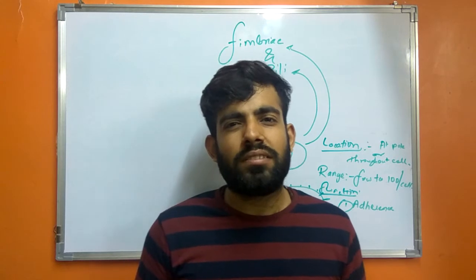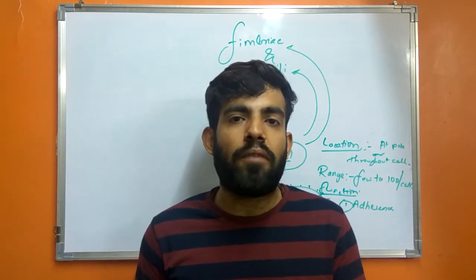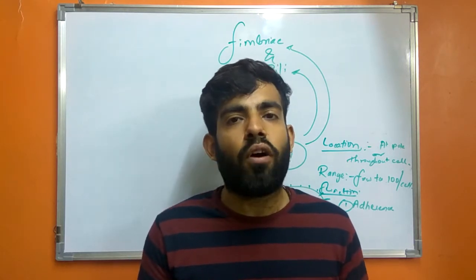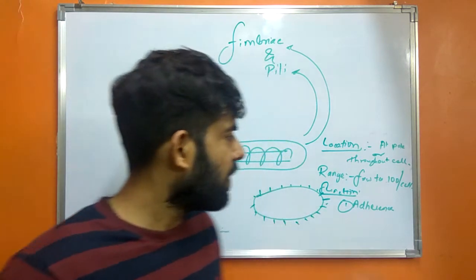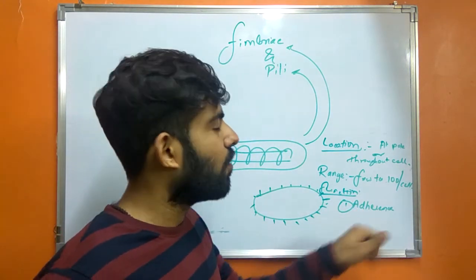Due to genetic mutation, some organisms lose the ability to form or have Fimbria, thereby they are not able to colonize and are not able to cause the disease. So its function is adherence and to colonize the bacteria and cause the disease.